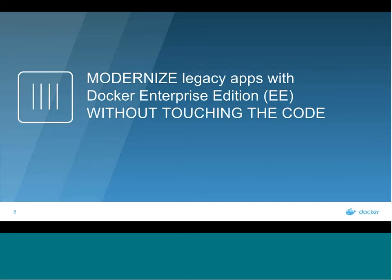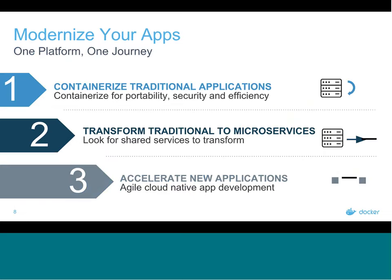Modernize legacy applications without touching the code base using Docker Enterprise Edition. Brandon will talk about Docker Enterprise Edition and how to get started with modernizing legacy applications. You can modernize without having intimate knowledge of the code base, nor do you need to plan a giant development effort. Step one is to containerize your legacy applications using Docker Enterprise Edition. That gets you to step two, which is all about microservices and distributed app architectures. And step three is where you can actually start innovating, accelerating new application development and getting apps to the cloud.